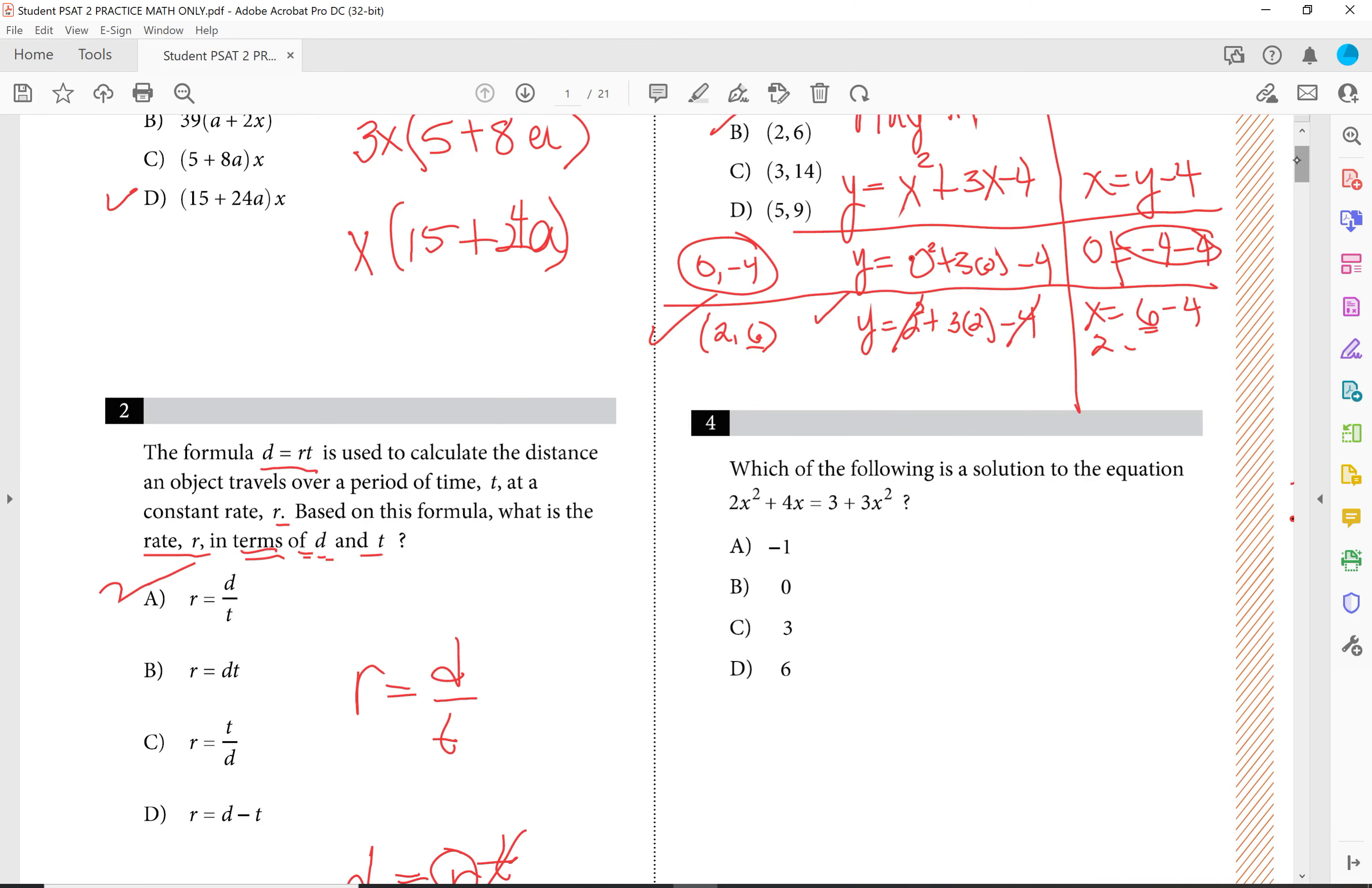The next question, number 4, you have, in this case, a quadratic. And so what you'd want to do in this case is, now they're asking you to actually use the quadratic method. So we're going to take our 2x squared. We're going to subtract 2x squared. And we're going to move it over here.